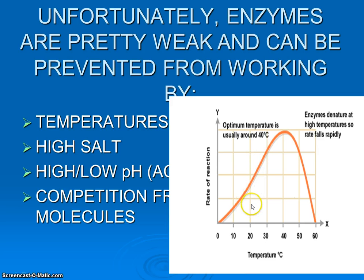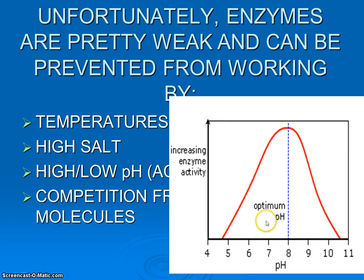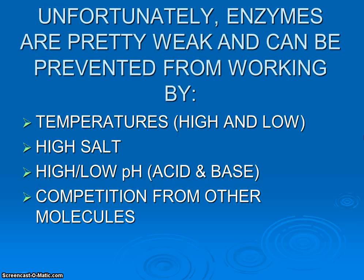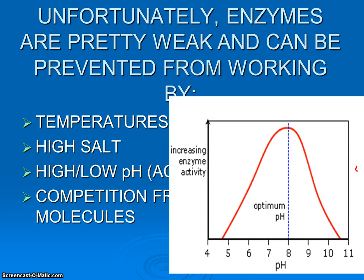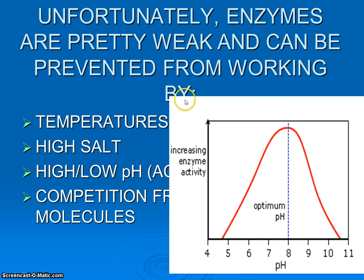Looking at this graph showing temperature versus how fast reactions occur: in this generic example, the reaction works best at about 40 to 42 degrees Celsius. When the temperature is too low, the enzyme is prevented from working. When it's too high, it denatures the enzyme, and the reaction doesn't work. So all enzymes have optimal conditions they work best under. Same thing with pH — this particular enzyme works best at pH 8. They are very, very particular in how they work.